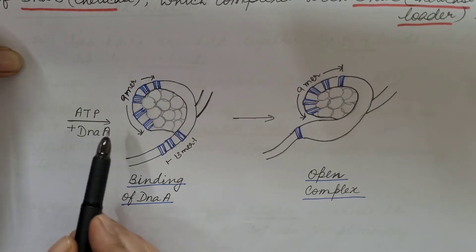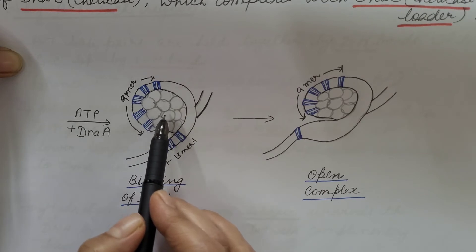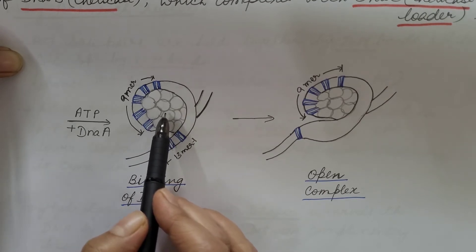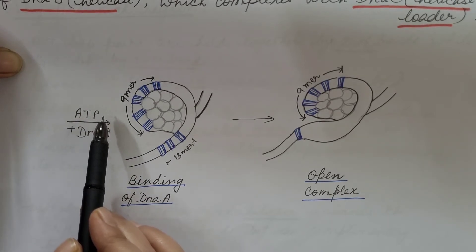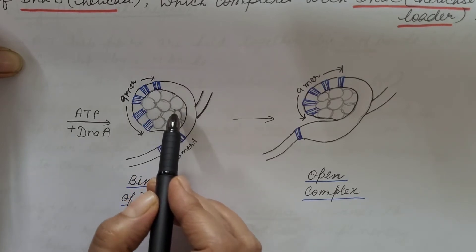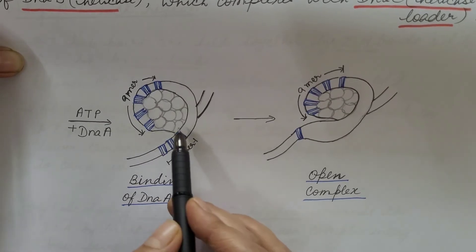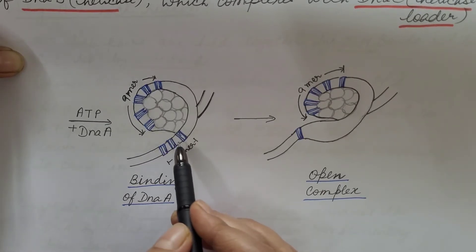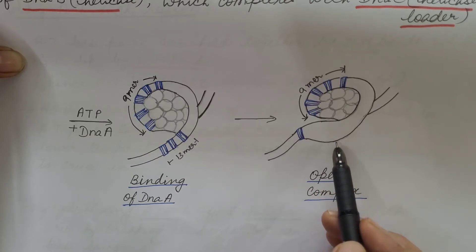DNA-A comes and binds with the 9-mer region of the origin of replication. It requires energy which is obtained by hydrolysis of ATP. When it binds then the DNA twists as a result of which DNA-A comes in contact with this 13-mer region. At this region, the two strands separate or the hydrogen bond between the base pairs breaks and the two strands of the DNA separates.